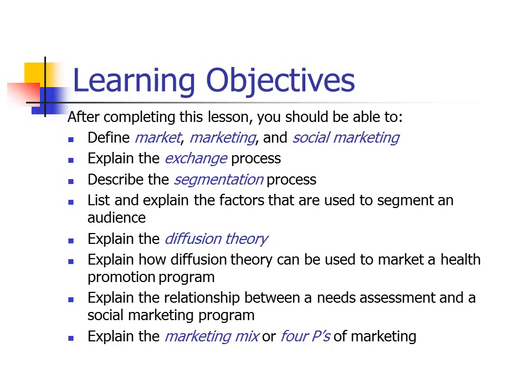Here are our learning objectives for today. I want you to be able to define market, marketing, and social marketing. Explain the concept of exchange in marketing. Describe segmentation — where we take a priority population and break it up into different segments and tailor our messages to those segments. Explain the factors used to segment an audience, explain diffusion theory and how it can be used to market a health promotion program, explain the relationship between a needs assessment and a social marketing program, and finally, probably the most important takeaway: the marketing mix, or the four P's of marketing.